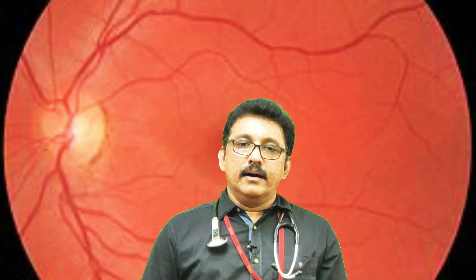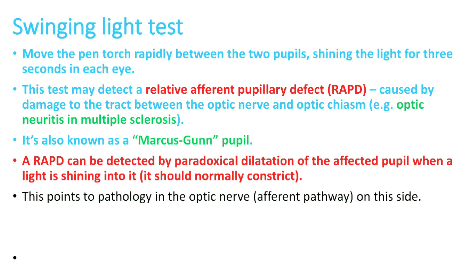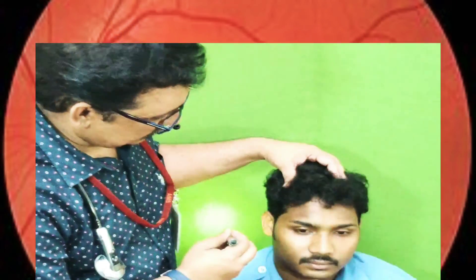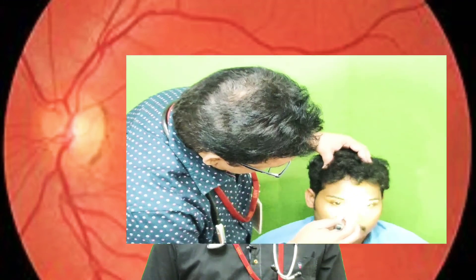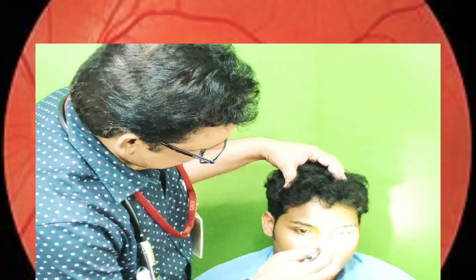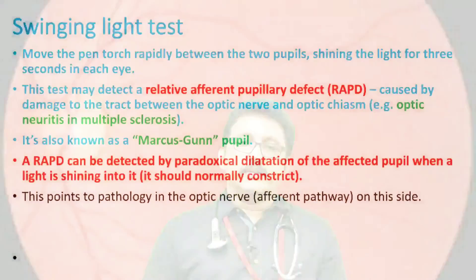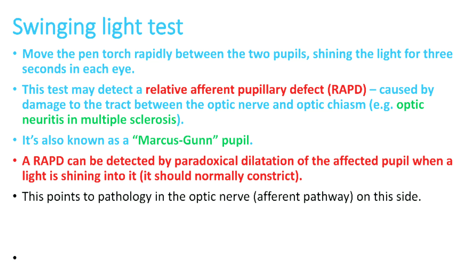The swinging light test is used to detect a relative afferent pupillary defect (RAPD). Ask the patient to sit in front of the examiner and swing the torch light from right side to left side. When the light falls on the affected eye, instead of constriction you see a paradoxical dilatation of that pupil. This is called Marcus Gunn pupil and is seen especially in optic neuritis in multiple sclerosis.